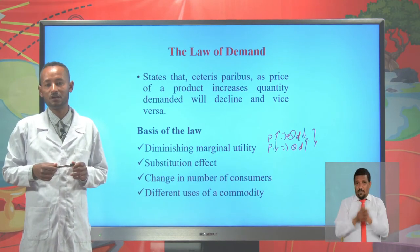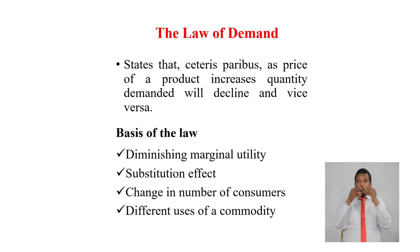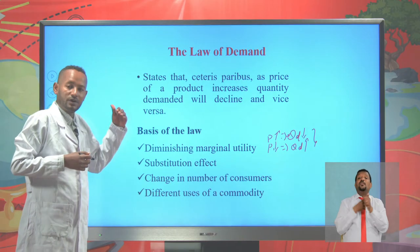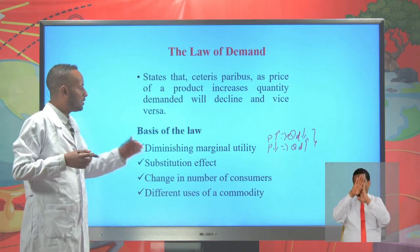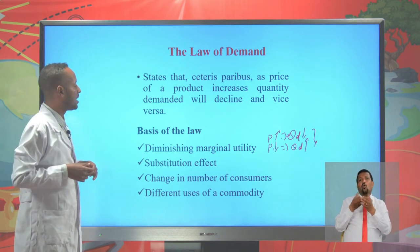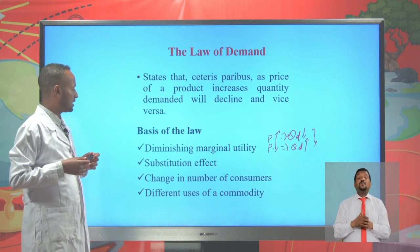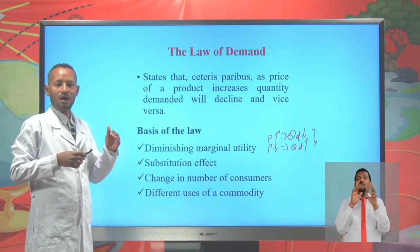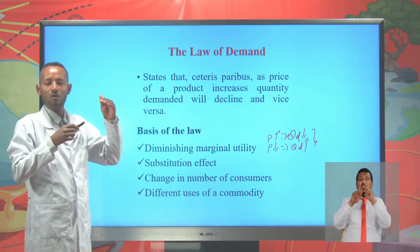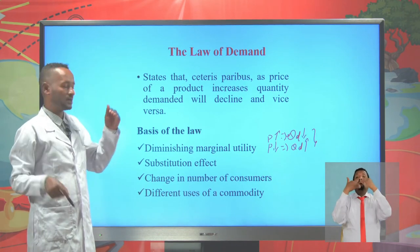The principle of diminishing marginal utility states that as we consume more and more of a commodity over a period, the additional utility from additional consumption will decline. If the additional satisfaction declines, people tend to reduce their quantity demanded when price rises. Another basis is the substitution effect: as price of a commodity increases, people will substitute one commodity for another, so quantity demanded will decline.